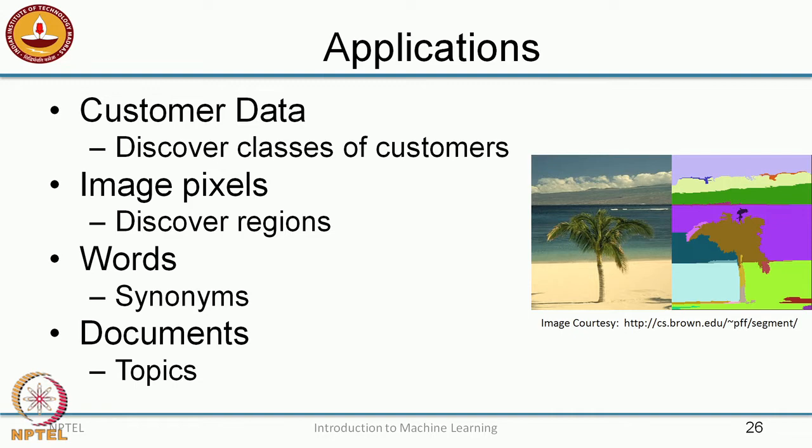Here are a few representative applications. One is to look at customer data and try to discover classes of customers. Earlier in the supervised learning case we looked at whether a customer will buy a computer or not; instead, we could just take all the customer data and group them into different kinds of customers who come to your shop, and then do some kind of targeted promotions at different classes. This does not necessarily come with labels — you are just finding out which customers are more similar to each other.